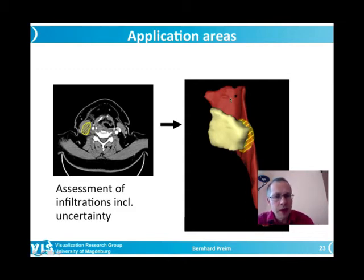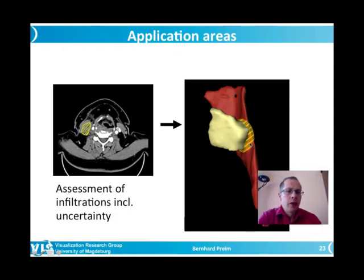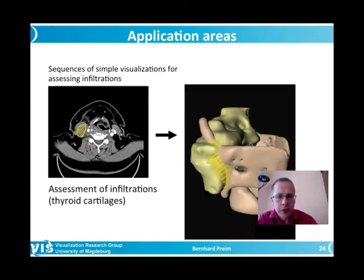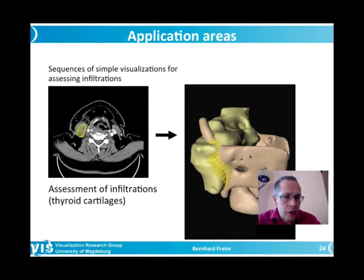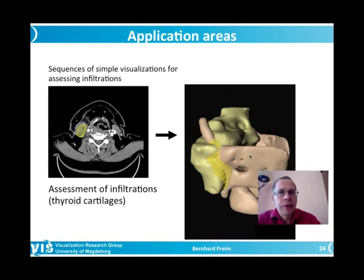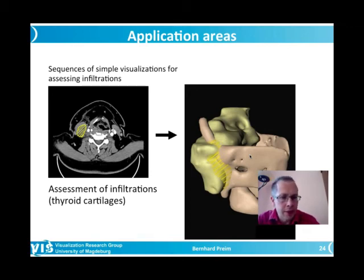The neck anatomy visualization involves muscles, arterial structures, the larynx, and the trachea where air enters the bronchial tree. The patient has a tumor close to the larynx, and the images were acquired to understand how to operate. In practice, a sequence of simple visualizations showing only a few anatomical structures simultaneously is better than one complex visualization. For example, the assessment of tumor infiltration of a muscle is shown, including a transparent region representing the uncertainty about where the exact tumor border lies.